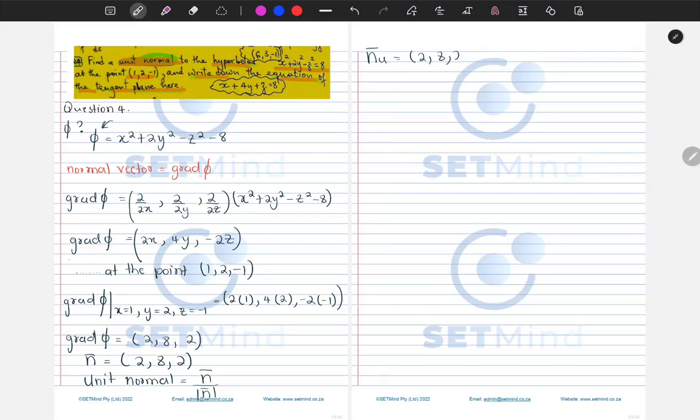So I'll have (2, 8, 2) divided by the square root of, or the magnitude first, of (2, 8, 2).